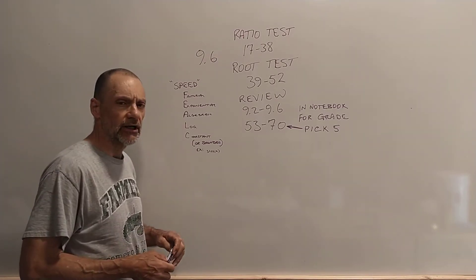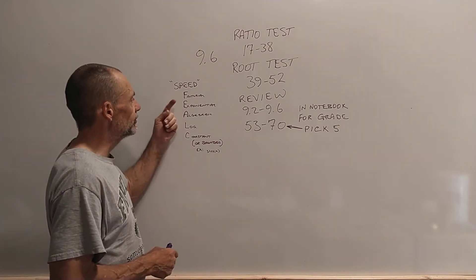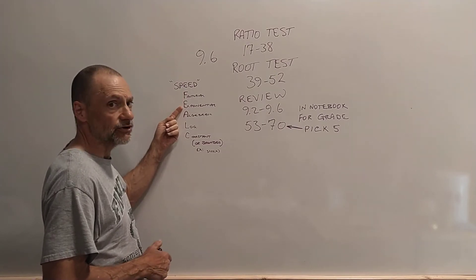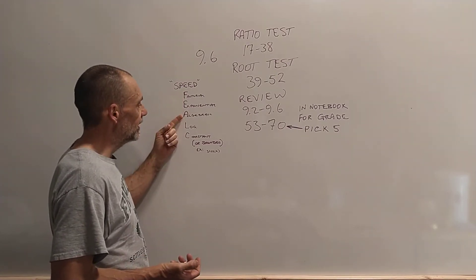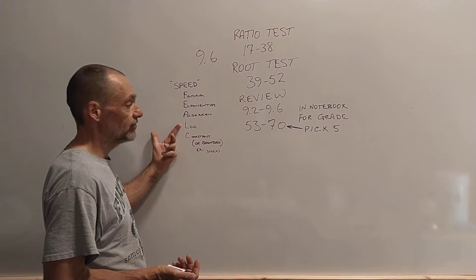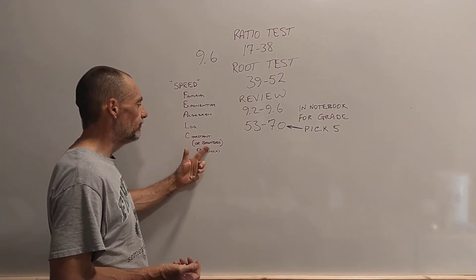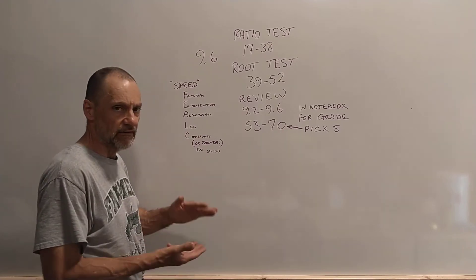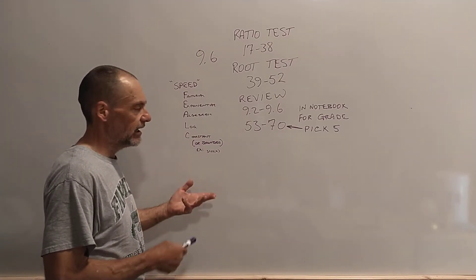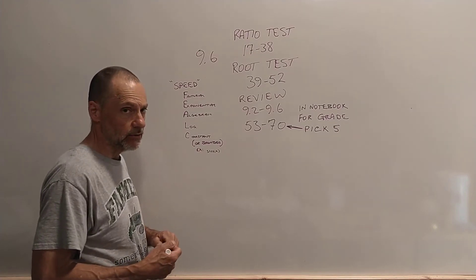I've always kind of understood it as a rule of thumb. The speed of a function: factorial functions increase faster than exponential functions, which increase faster than algebraic functions, which increase faster than log functions, then at the bottom of the list we've got constants, or bounded functions like sine x. The function's bounded between, like sine 1 and negative 1, even treated like a constant.